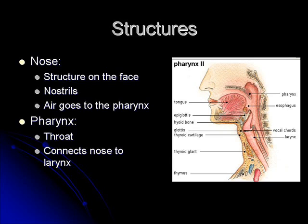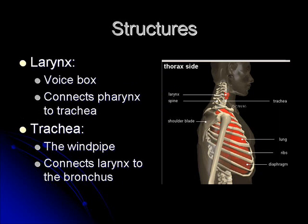Your pharynx is the fancy way of saying throat, and this is what connects the nose to your larynx, the neck structure within your respiratory system. So air starts in your nose and mouth, goes to your pharynx, and then to your larynx — the fancy way of saying your voice box — which is the piece that connects the pharynx to the trachea.